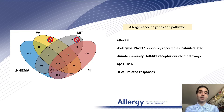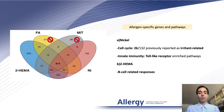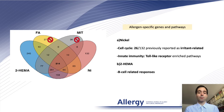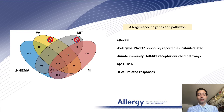With regard to allergen-unique dysregulated genes, only two resulted in enriched pathways. Firstly, nickel was associated with biomarkers of irritancy as well as toll-like receptor enriched pathways. And then, TOHIMA presented further enriched B cell responses. This finding indicates that allergen-related immune differences may be possible.